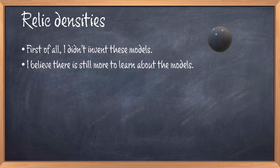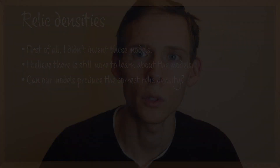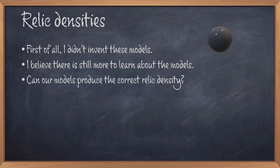Now having said that, the first thing a theory trying to explain the dark matter problem should be able to do is have some mechanism for producing the dark matter that we observe. So the first question would be, can the model reproduce the dark matter that we measure, or in physics terms, can we reproduce the dark matter relic density?